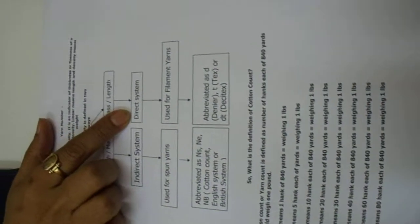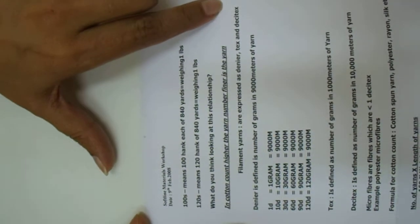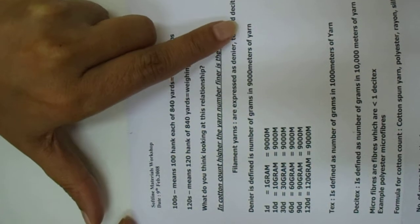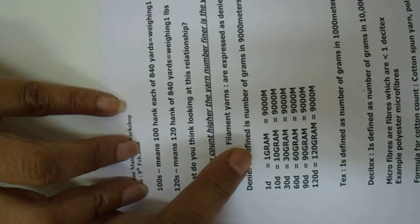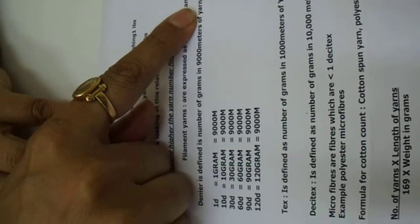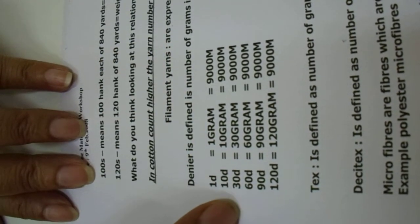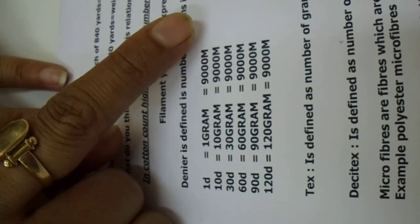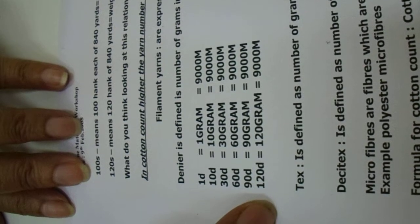In the direct system, filament yarns are generally expressed in denier, tex, and decitex. The most popular unit is denier. Denier is defined as the number of grams in 9000 meters of yarn. A count of 1 denier means 1 gram in 9000 meters. 10 denier means 10 grams in 9000 meters. 30 denier is 30 grams in 9000 meters, 60 denier is 60 grams, and 90 denier is 90 grams in 9000 meters.